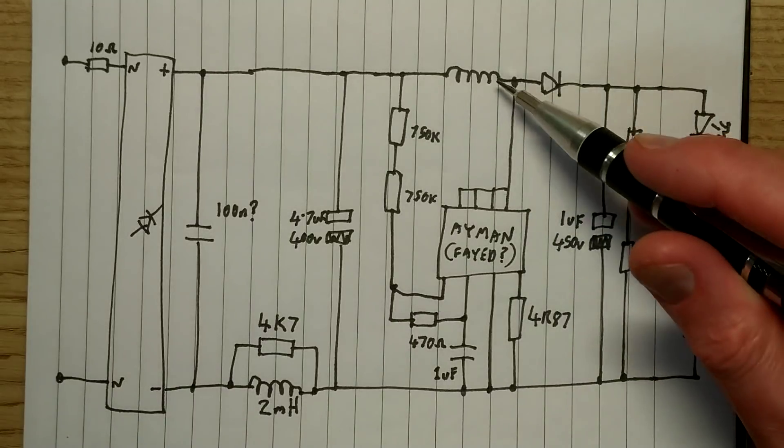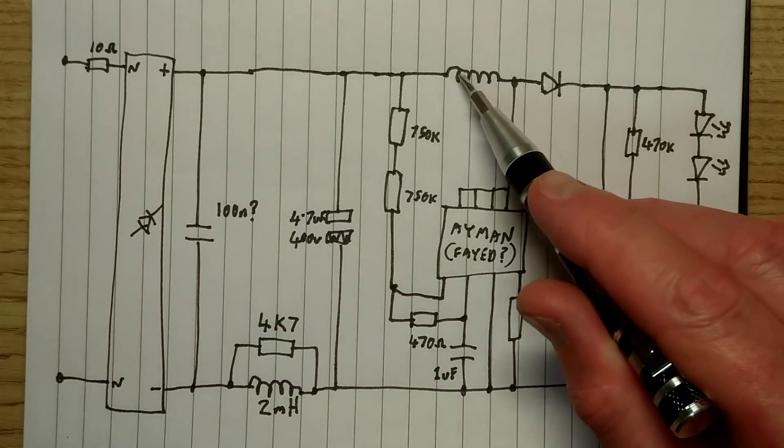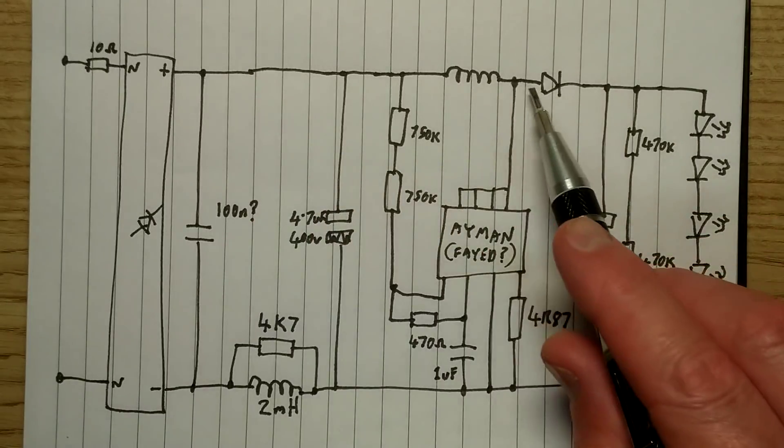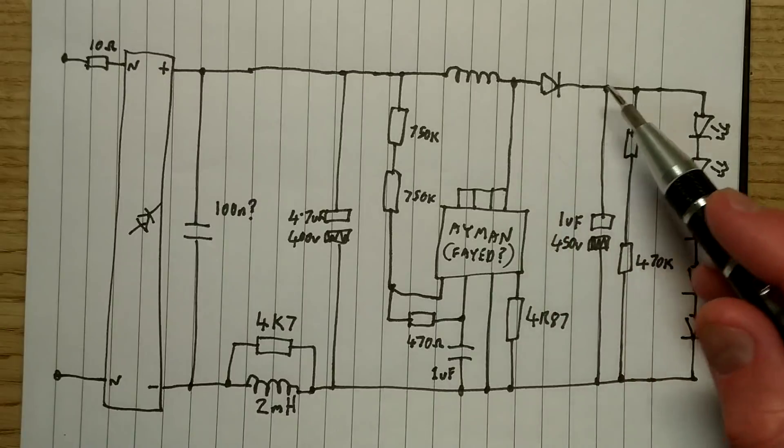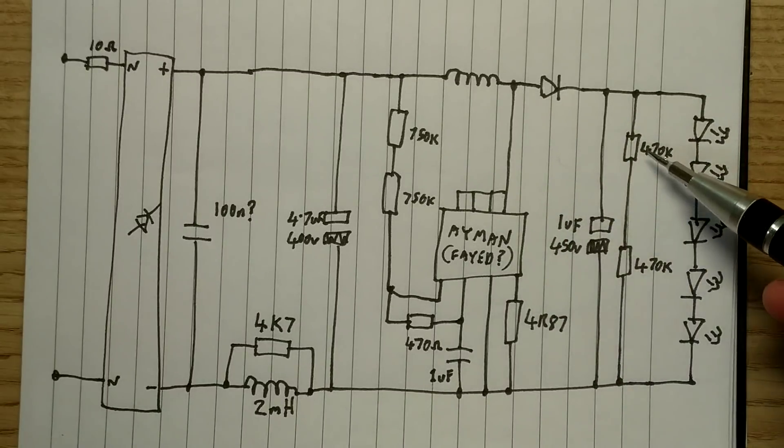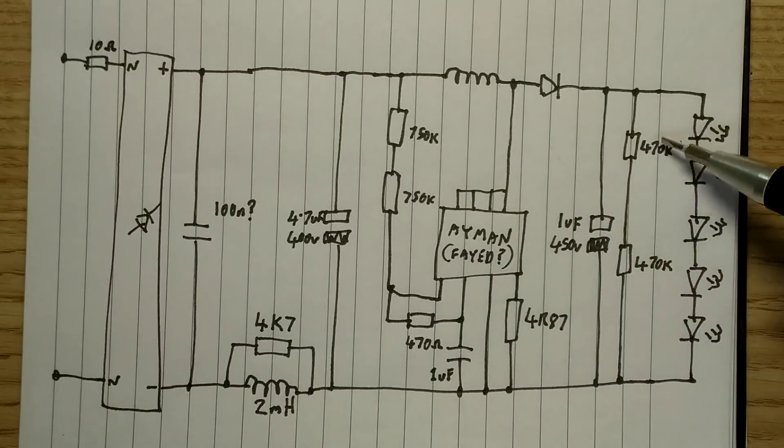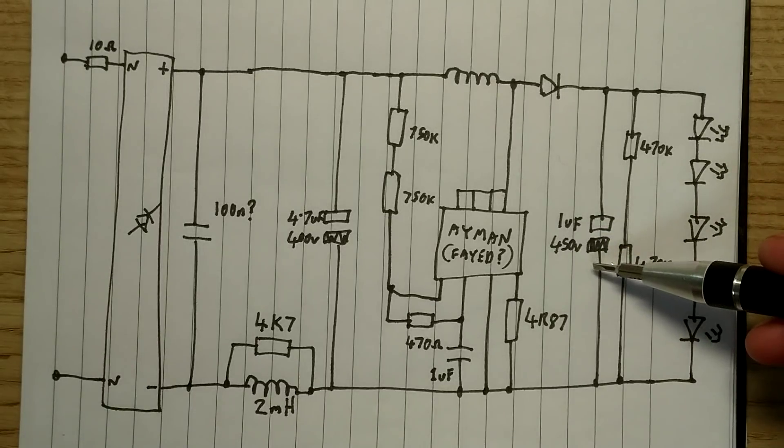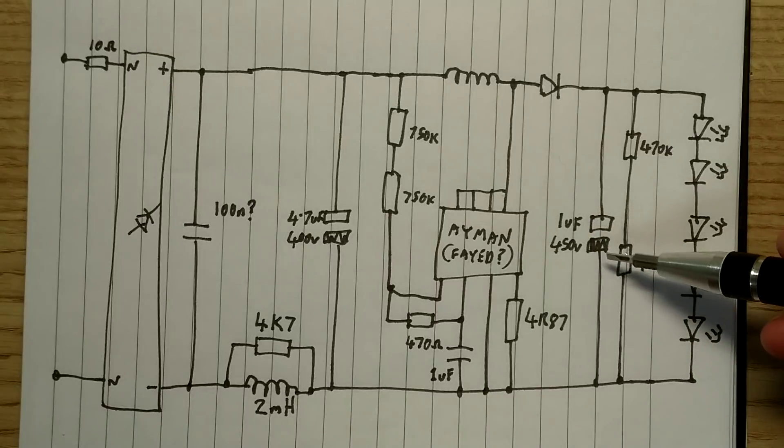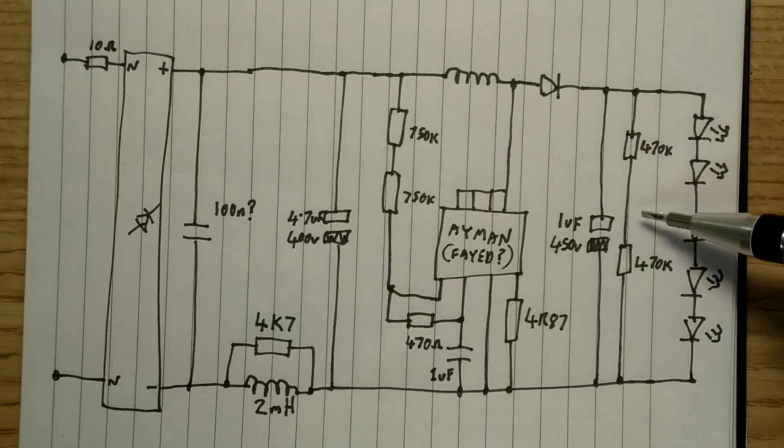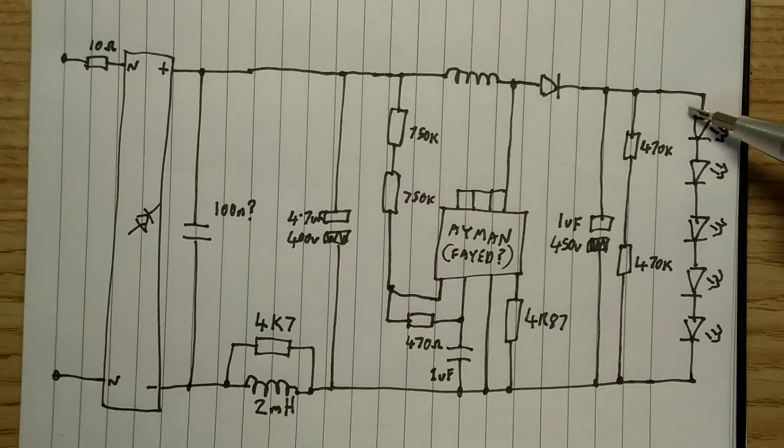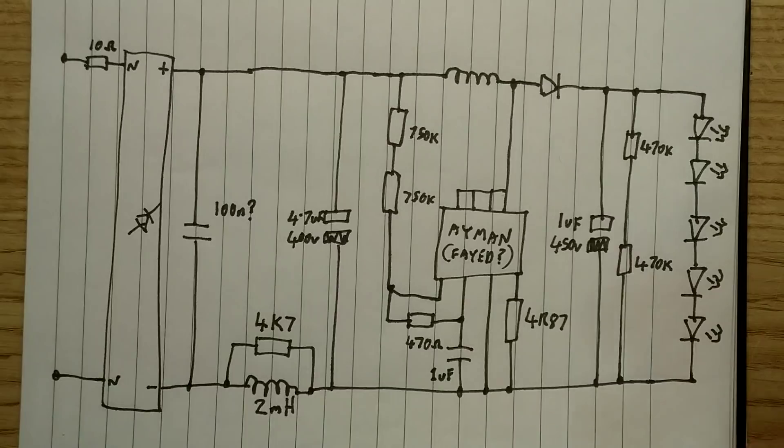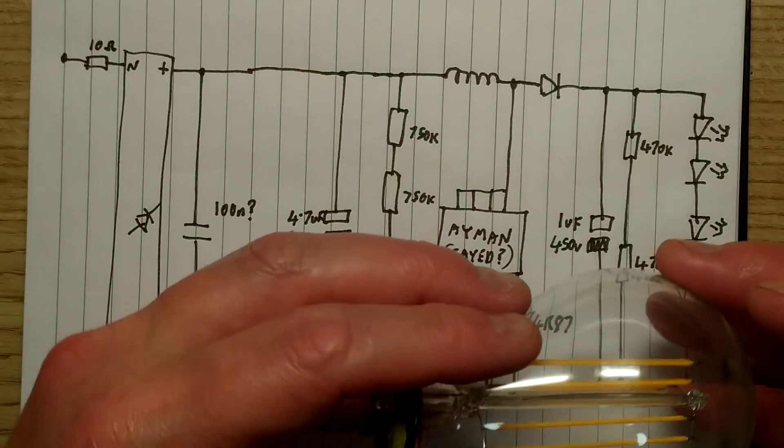When it turns off, the inductive magnetic field in the inductor collapses and adds on to the mains voltage and boosts it up, goes through this diode, charges this capacitor. It's got two 470k resistors across it, just purely probably to discharge this capacitor when it's turned off. But also to make sure the LEDs go on off nice and precisely, because the LEDs are so sensitive to tiny currents like microamps.